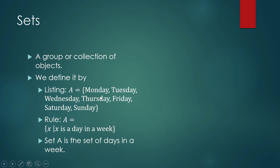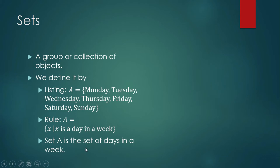By the listing method, we collect the elements of a set, put them in braces, and separate them by comma. By the rule method, you write: A is equal to x such that x is a day in a week. We can also put it in ordinary English language: Set A is the set of days in a week.